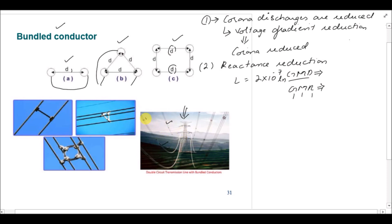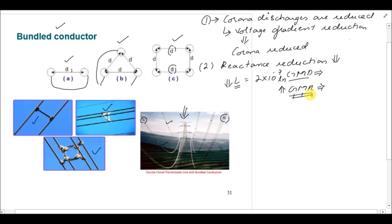This is a double circuit line, which we will discuss later in remaining lectures. This is the actual figure of bundled conductors — with two conductors bundled, three conductors bundled, or four conductors bundled. To reduce the reactance, we have to reduce the inductance. To reduce the inductance, the GMR has to be increased, and for the bundle conductor the GMR is automatically increased.